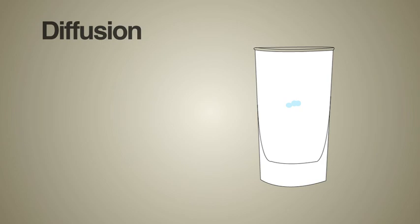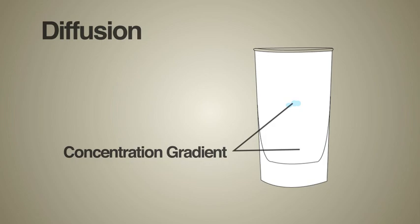Diffusion is a process where molecules move from an area of high concentration to an area of low concentration. The difference in the amount of a certain type of molecule between two areas is called a concentration gradient.